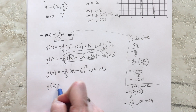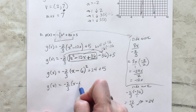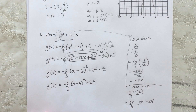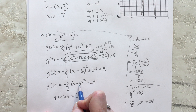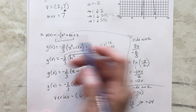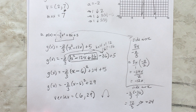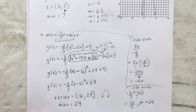Combining 24 - 1 gives us +23... wait, the k value is 29. The exact coordinates of the vertex are (6, 29). Because the a value is negative, we know it opens downward and has a maximum, and the maximum is 29.